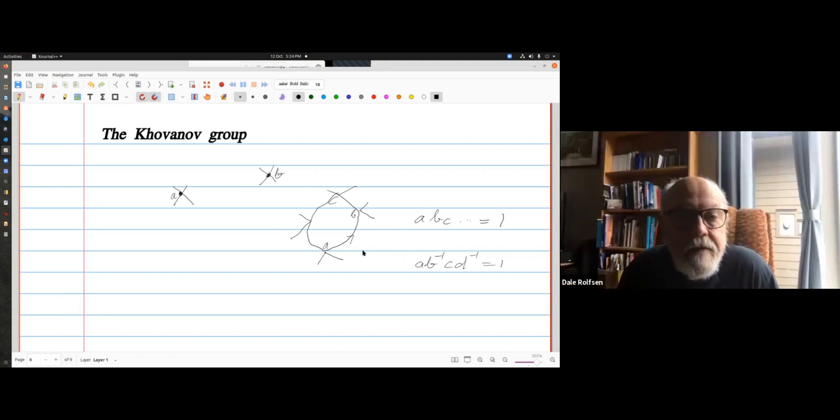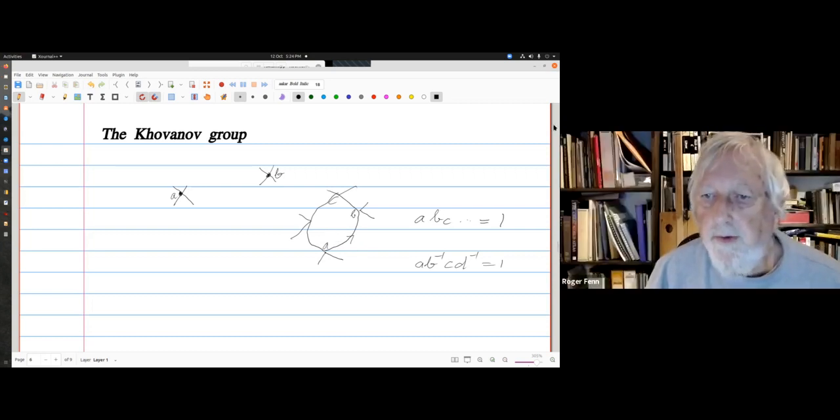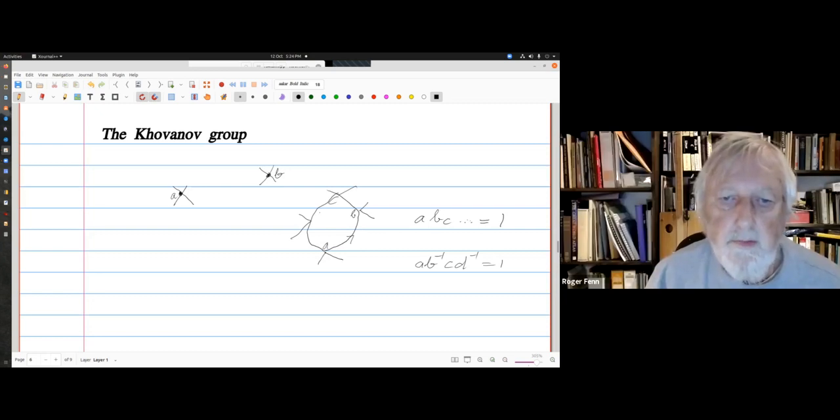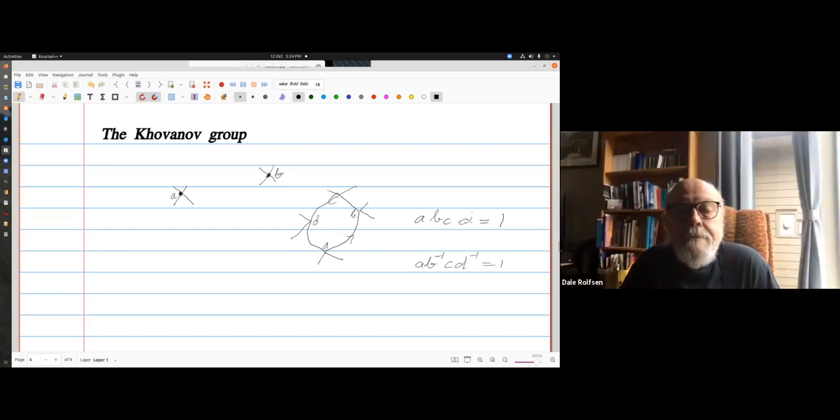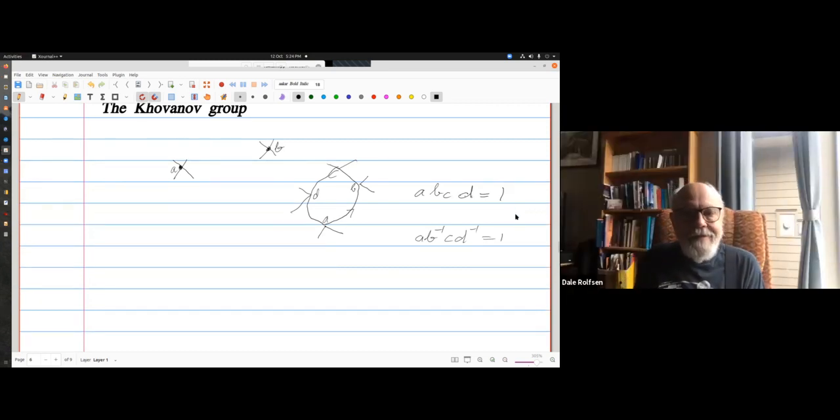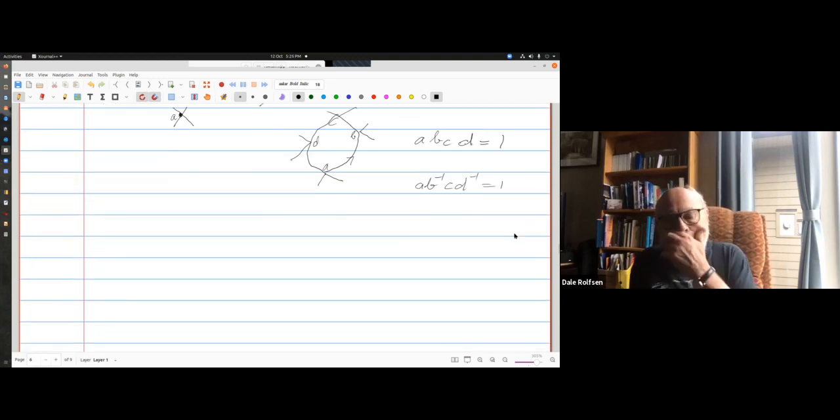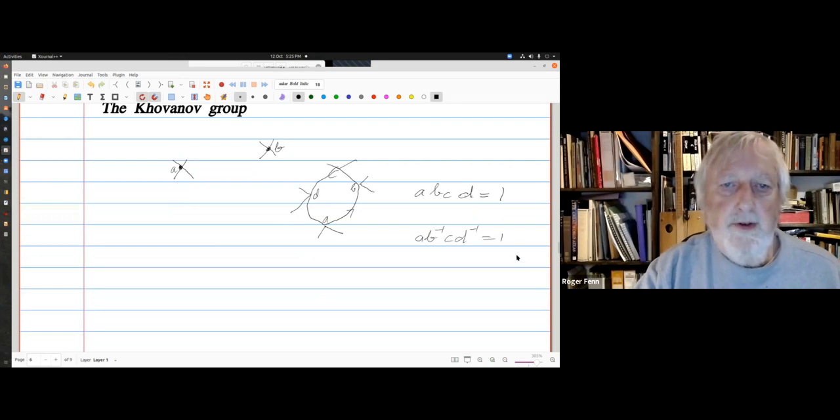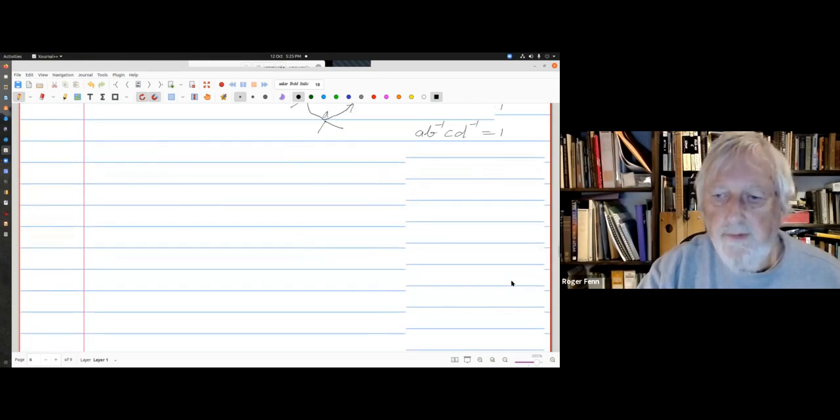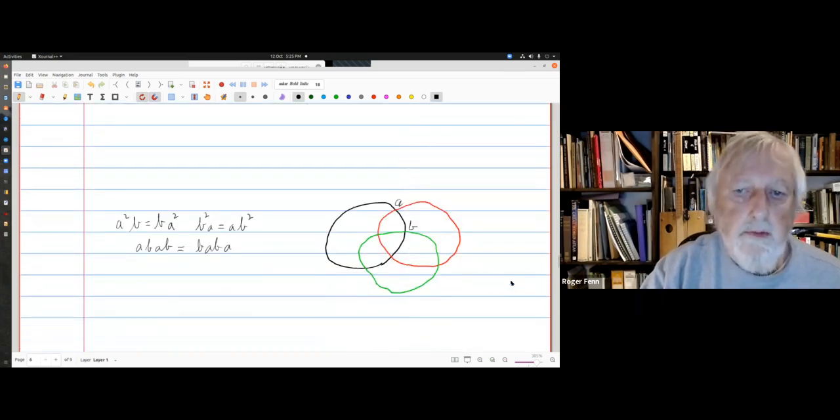Andy Bartholomew and I noticed that all these crossings are flat in the sense they're unordered, unoriented. We have a method of putting a sign on this. Instead you would get something like A B inverse C D inverse equals one. There's a method of putting a sign on the vertices that gets you a different group. I have no idea how it's related to the original Khovanov group. That's work in progress.